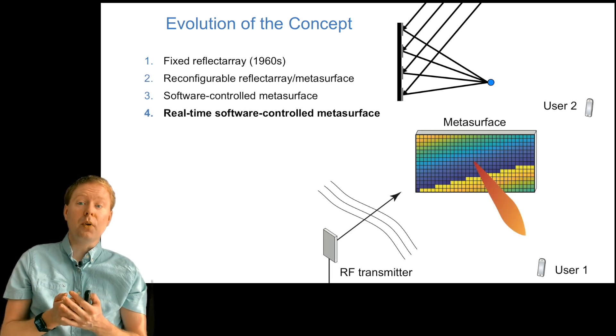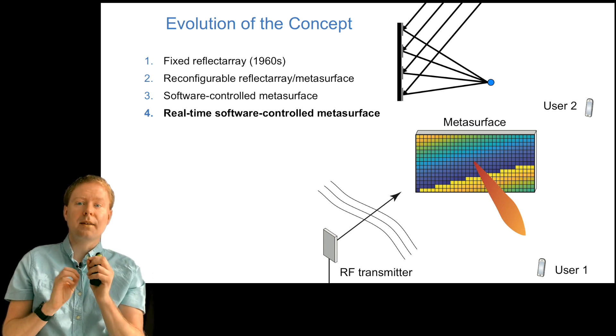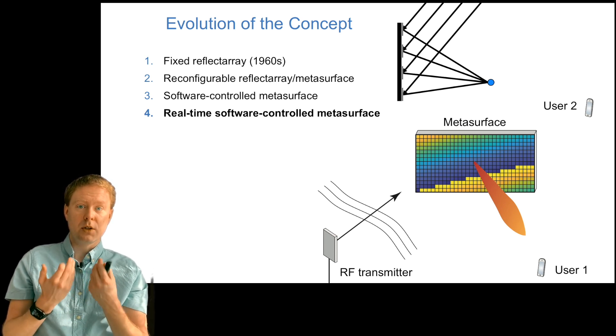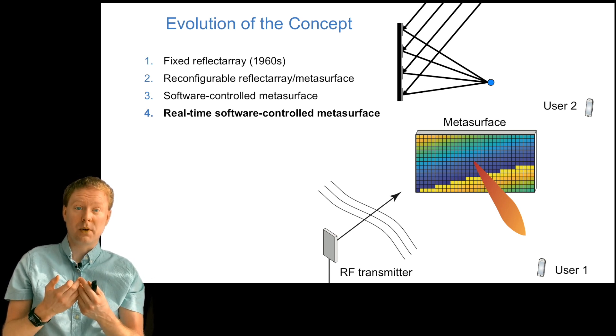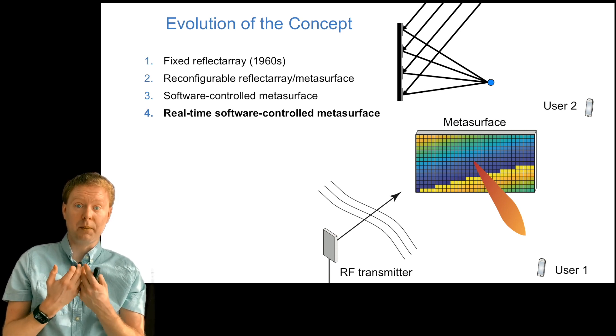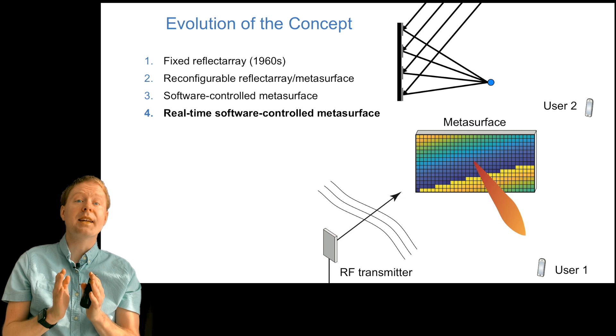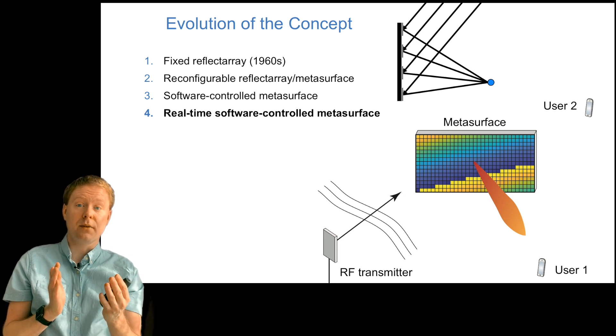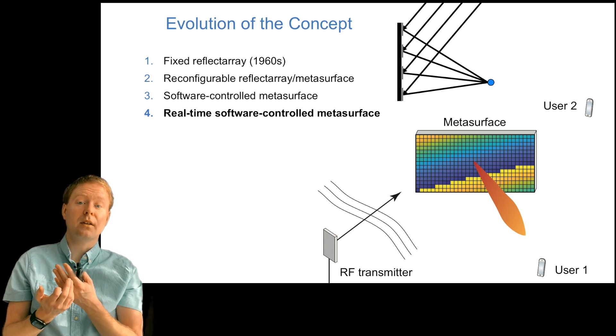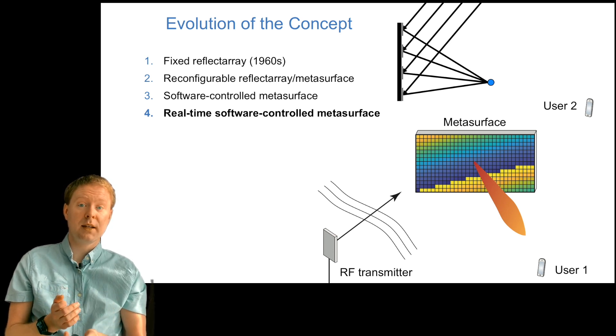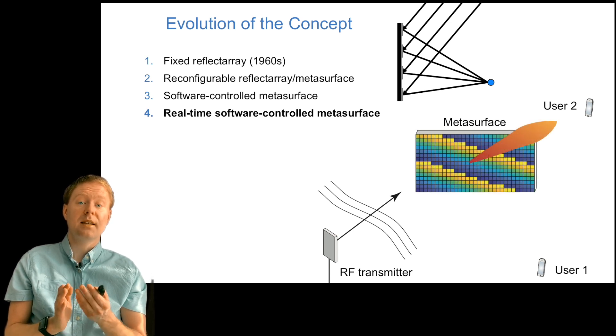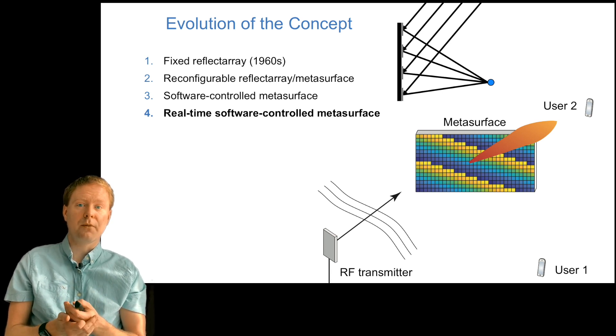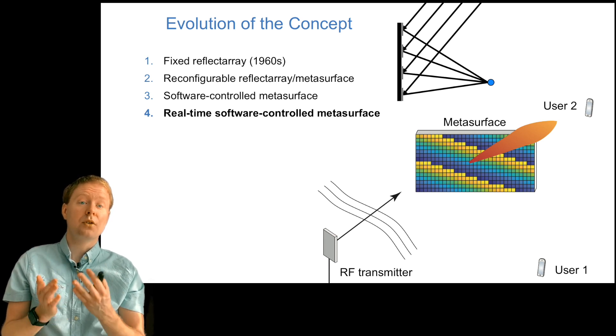Later, the concept of reconfigurable reflect arrays or meta-surfaces appeared, where we can control these different elements, which we call meta-atoms. And later, software control, where we can even control them using software. What people are nowadays considering in this reconfigurable intelligent surface concept is a real-time software control meta-surface. The idea is that we have an RF transmitter that sends a signal, and the signal doesn't reach the user 1 here directly, but it reaches the meta-surface. We control it in such a way that the signal is getting reflected towards the user of interest. Then we can, in real-time, change it so instead the signal will now be reflected towards another user.